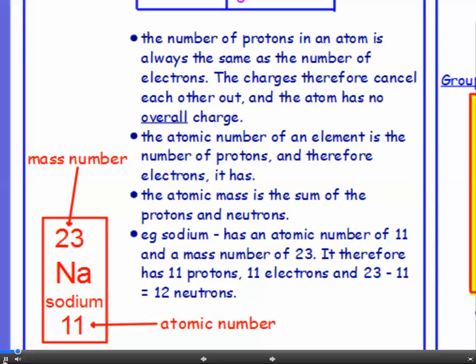Now, the bigger of the two numbers, the atomic mass or the mass number, 23 in the case of sodium, is the sum of the protons and neutrons. That's the protons and neutrons added together. Now, we know that sodium has 11 protons. Therefore, it must have 23 minus 11, which is 12 neutrons. So that's how you work out the number of protons, neutrons and electrons for an element.